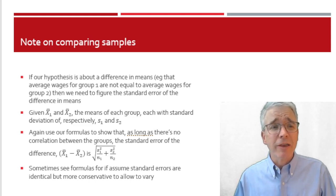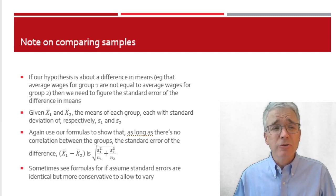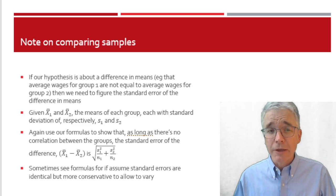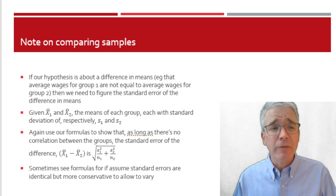To create that hypothesis test, we want to find the standard error of the difference in the means. With x-bar 1 and x-bar 2 representing the means of each group, standard errors S1 and S2, using the formulas about linear functions, show that as long as those are not correlated, as long as the outcomes, the two groups are indeed independent, then the standard error of the difference is going to be the square root of the sum of the variances, not the standard errors, divided by each n.